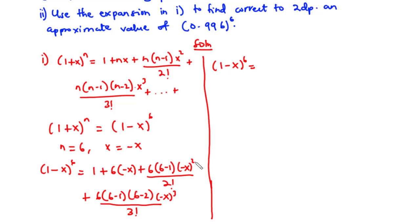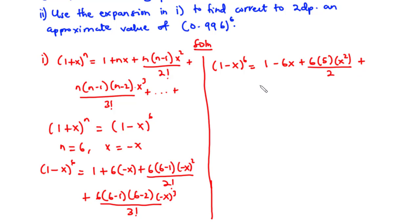Simplifying: we get 1 minus 6x, plus 6 times 5 times x squared divided by 2, plus 6 times 5 times 4 times (negative x)^3 divided by 3 factorial. Note that 2 factorial is 2 and 3 factorial is 6.